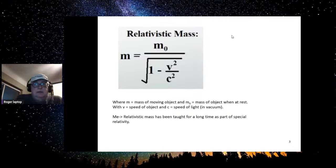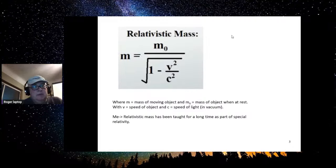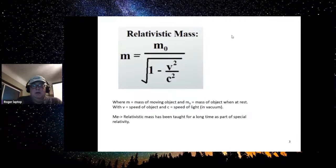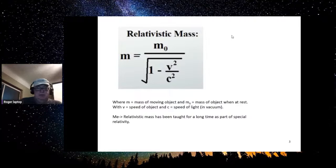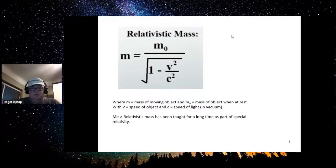So this is the equation for relativistic mass: m equals the mass of the moving object, m-subscript-zero is the rest mass of the object, v is the speed of the object, and c is the speed of light in vacuum. Relativistic mass has been taught for a long time as part of special relativity.